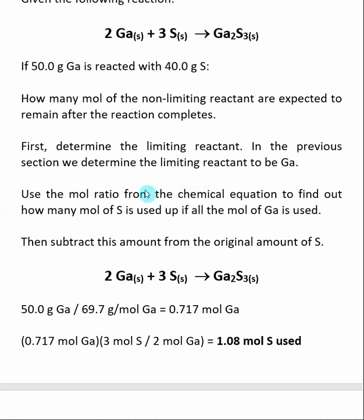We already know that our limiting reactant is gallium; that is a different calculation that we've already done. But now that we know that gallium is the limiting reactant, we know that sulfur is in excess.